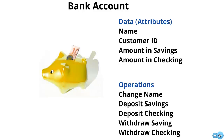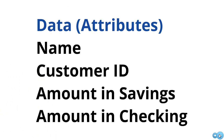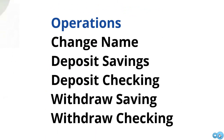For a bank account, we once again would want to think about the data and operations. For the data, we think about the name associated with the bank account, maybe an ID, the amount in savings, the amount in checking. When we think about data — our attributes, our properties — these are things we can know about some particular thing. For operations, we can think about changing the name on the account, doing a deposit on savings or checking, and also being able to withdraw money.